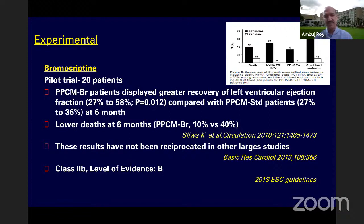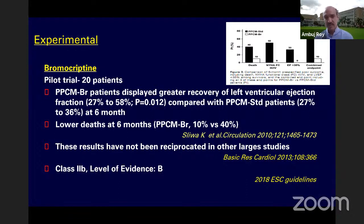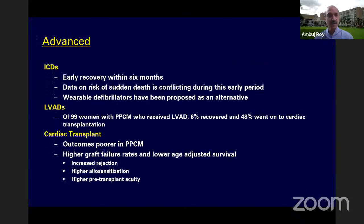Outcomes: approximately 50% of affected women recover systolic function, mostly within six months. Recovery after six months is much less likely, though late recovery has been reported. PPCM has better outcomes compared to other cardiomyopathies. Prognosis is poorer in Black women, multiparous women, and those older than 30. Prognostic factors: baseline LVEF most important — EF above 45% at two months predicts full recovery in 75% of women; EF below 30% has much lower recovery chances. LV dilatation, LV thrombus, RV dysfunction, high baseline troponin, elevated BNP, and high sFLT1 are poor prognostic markers.